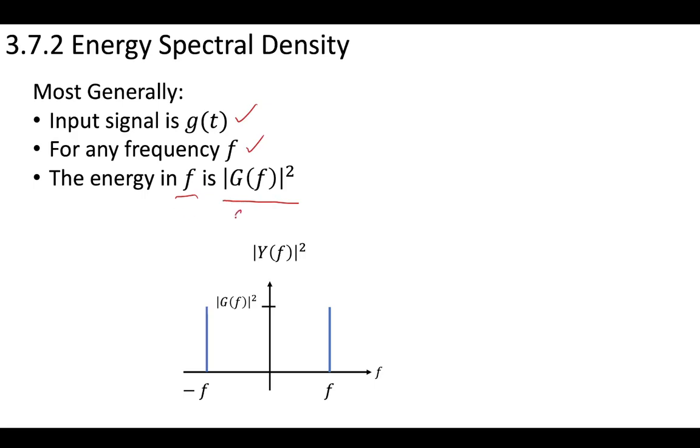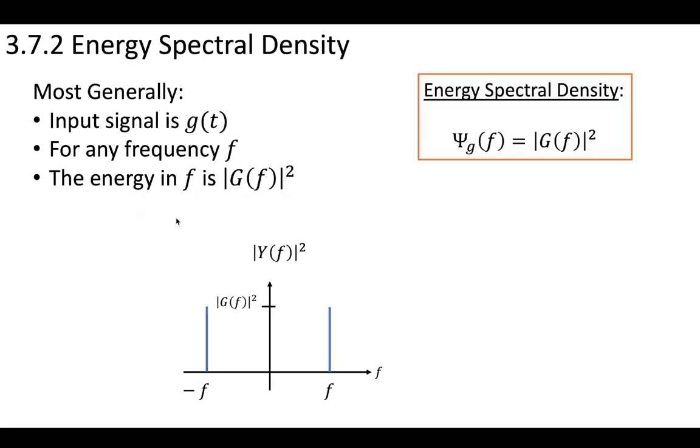The energy is contained within this band. We can generally say that the energy spectral density, which is defined as capital ψ, is equal to the square of that frequency domain signal.